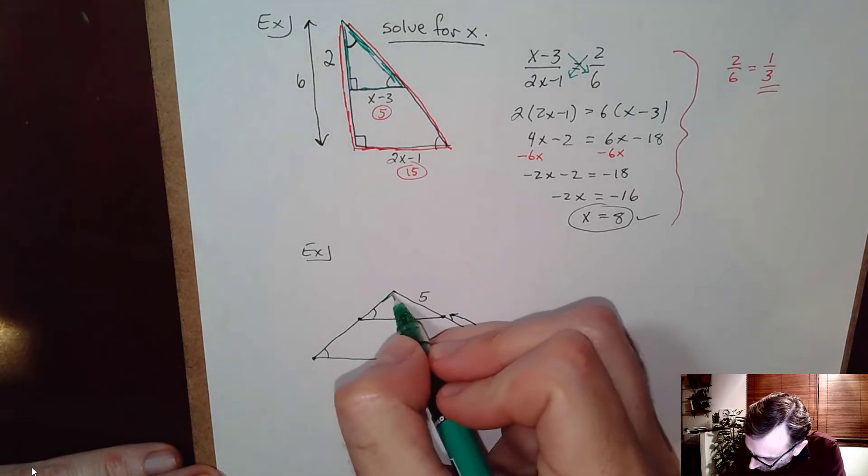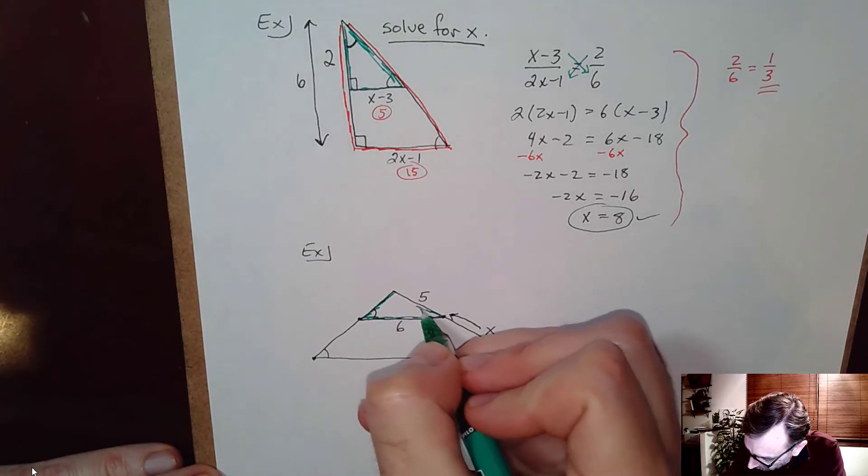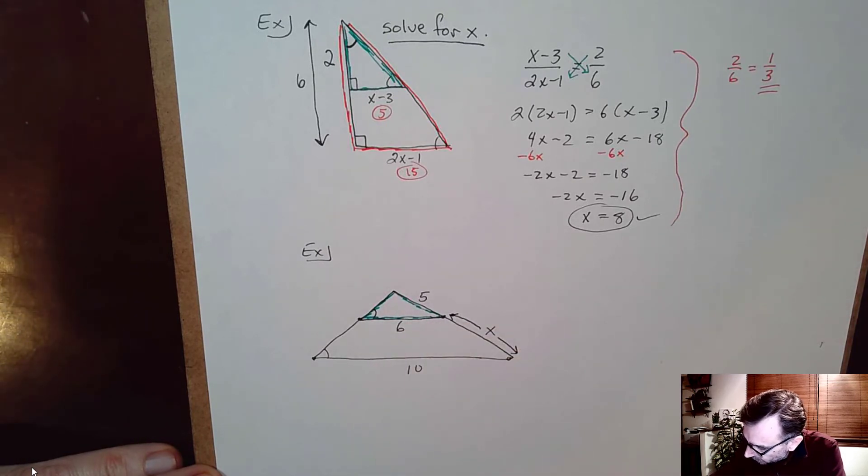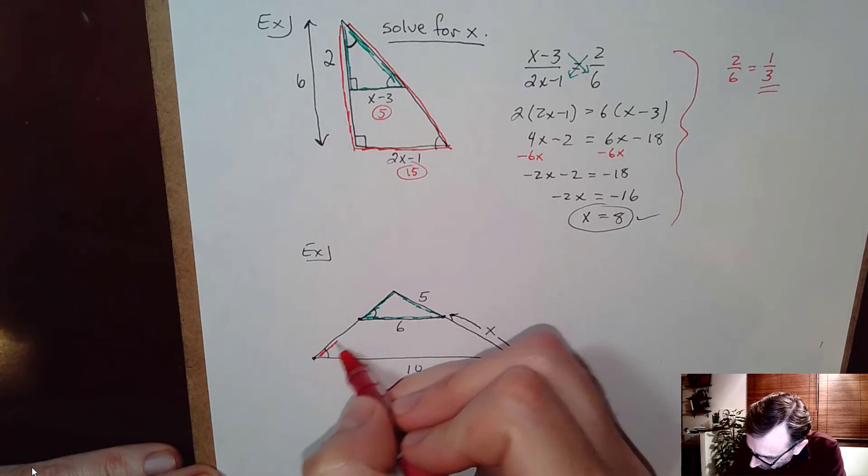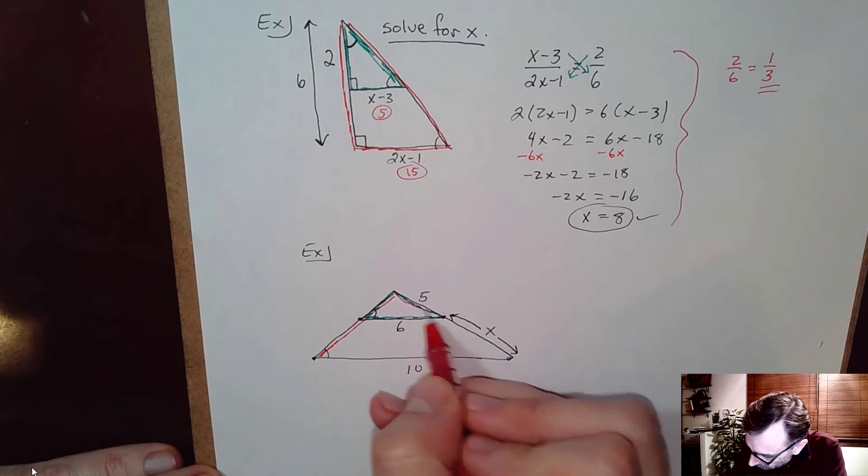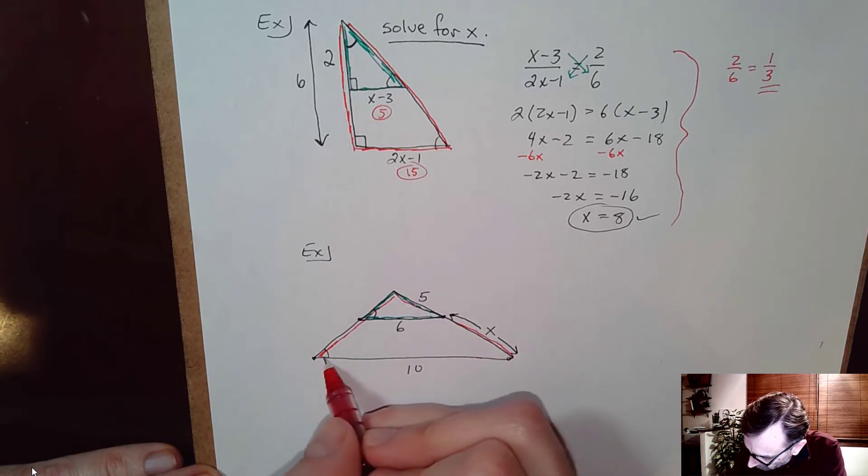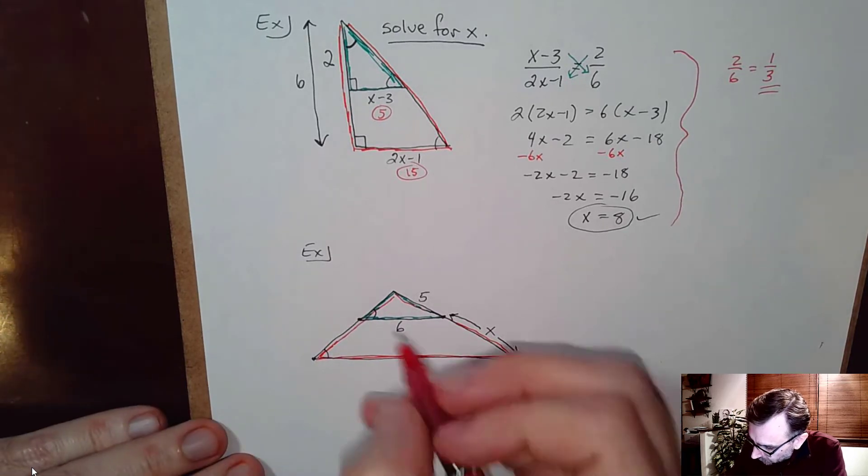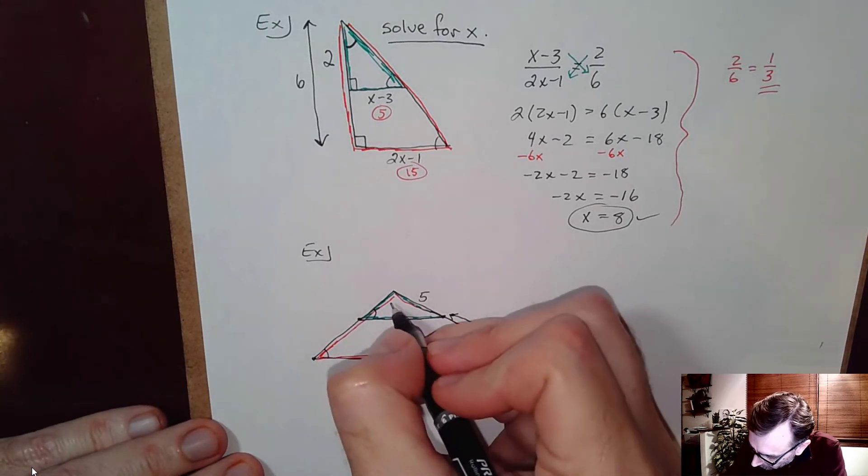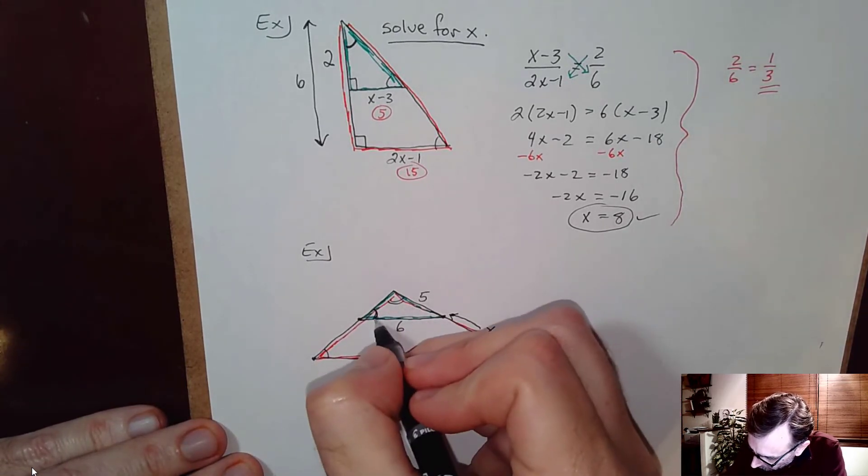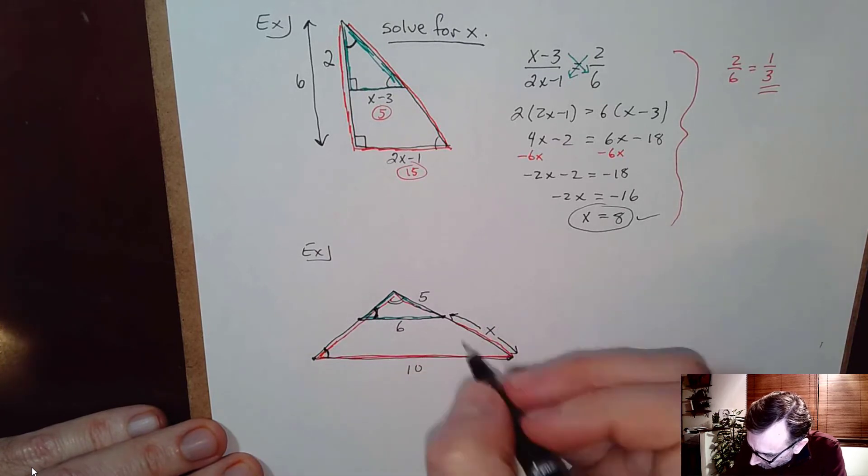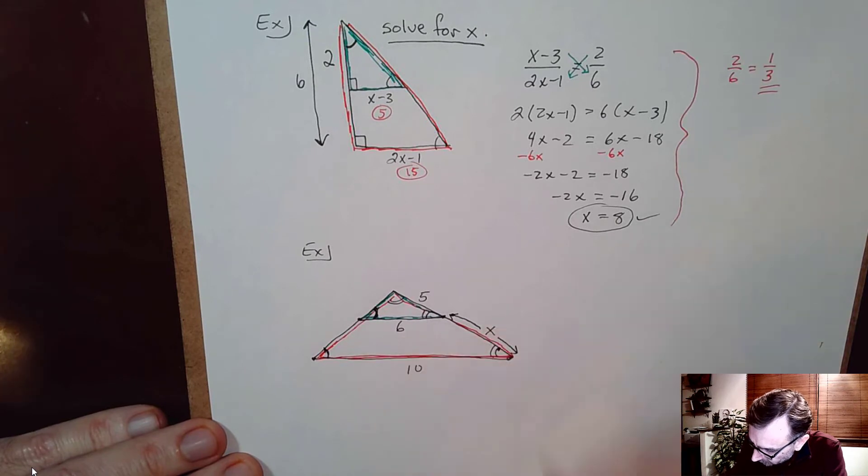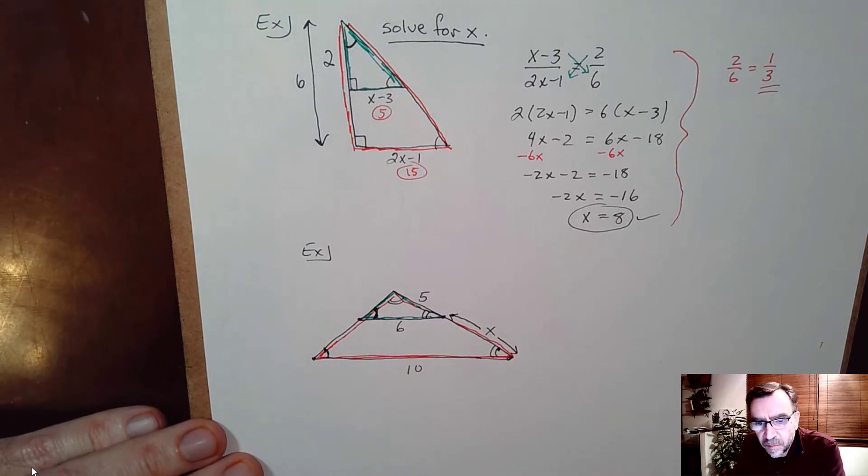So again we have a smaller triangle here. I'll highlight that in green. And we have a larger triangle. And these two triangles are similar because all of the angles are equal. So they share this angle. And then it was given that these angles were the same. And so therefore these angles have to be the same as well. So these things are definitely similar triangles.